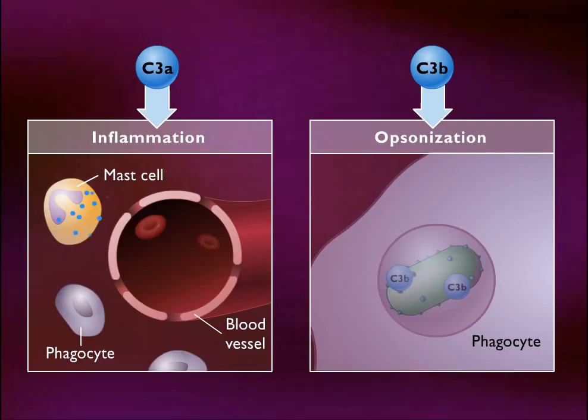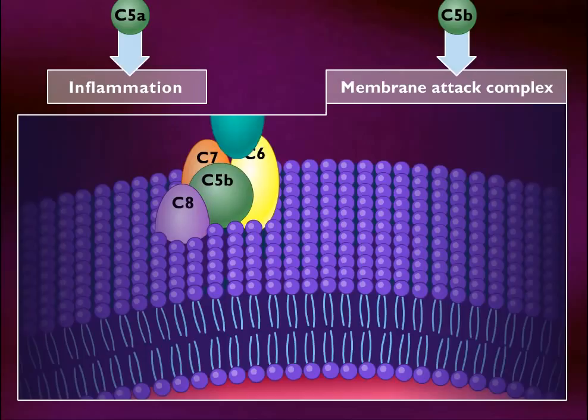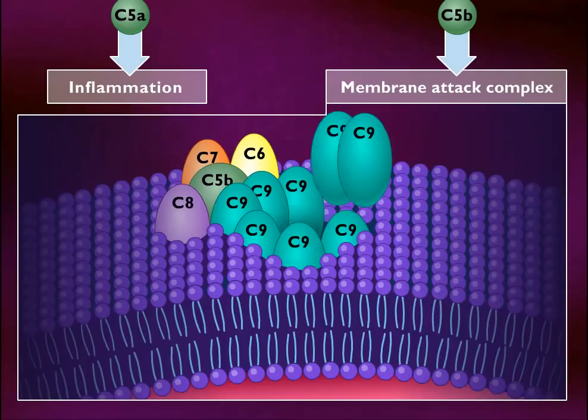Addition of properidin to C3-convertase results in formation of C5-convertase, which cleaves C5 into C5A and C5B. C5A enhances inflammation and acts as a chemoattractant for phagocytes. C5B reacts with other complement components including C6, C7, C8, and C9 to form a membrane attack complex. This structure forms a hole in the cell membrane and causes cells to lyse.